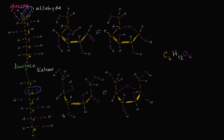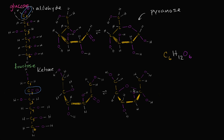Now let's think about how fructose might form a cyclical structure. As we've talked about before, the straight chain and the cyclical form can be in equilibrium in an aqueous solution. Most typically — and this is what is most prevalent in nature — you find glucose in a six-member ring where five members are carbons and one is an oxygen. When you have a carbohydrate with a six-member ring where one of the members is an oxygen, you call this a pyranose.